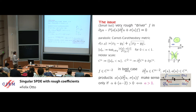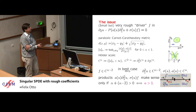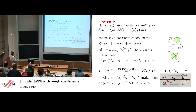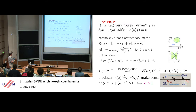The issue is: we want to consider this PDE with a very rough driver F. We measure roughness in the Hölder scale. Since we're dealing with a parabolic problem, we use the parabolic metric. Hölder spaces and norms are defined as usual by looking at the modulus of continuity with respect to the alpha-th power of this distance. Negative Hölder spaces are defined as taking derivatives of positive Hölder functions.